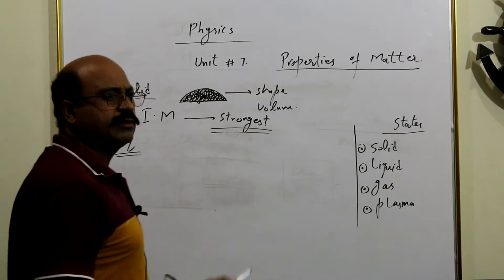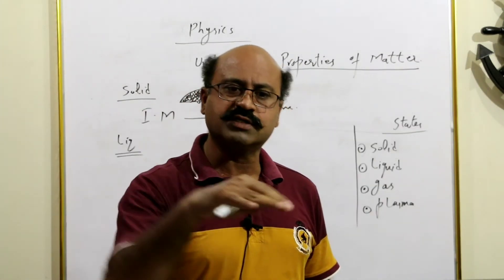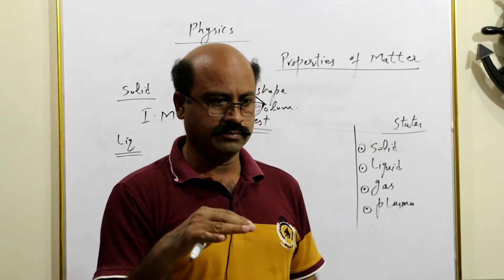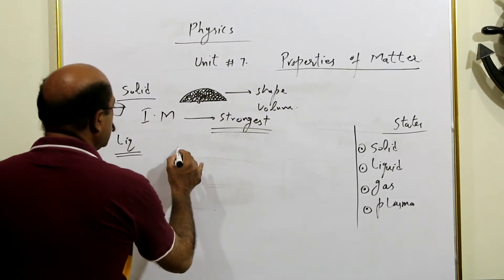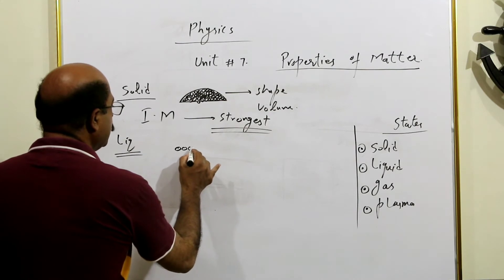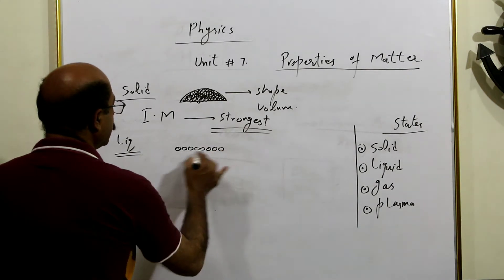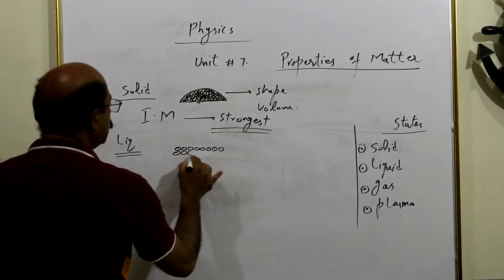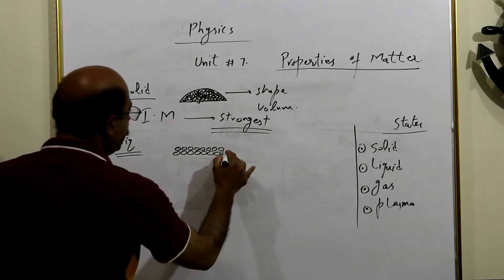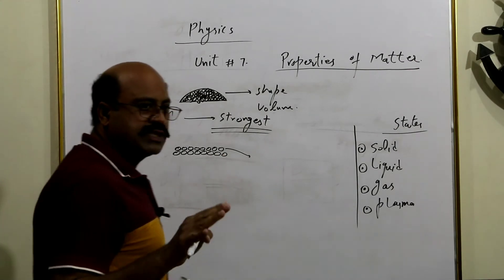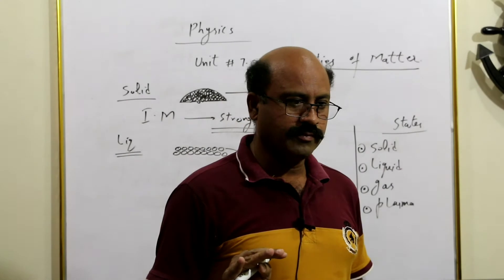Pani lein, petrol lein, kuch bhi lein — liquid woh cheez hoti jo flow kar sakti ho. Ab liquid molecules ko hum dekhte hain toh is mein molecules ke darmiyan halka halka gap paya jata hai. Jo liquids hote hain woh layers ki form mein paye jate hain, aur woh layer-wise ek doosre ke upar se slip ho ke flow karte hain.